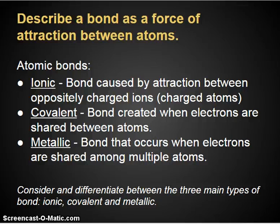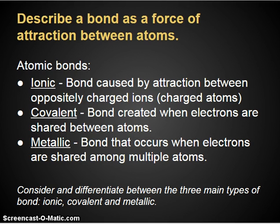A bond is a force of attraction between atoms. With atomic bonds, there are three different types: ionic, covalent, and metallic. Ionic bonds are caused by attraction between oppositely charged ions or charged atoms. Covalent bonds occur when electrons are shared between atoms. A metallic bond is a modified covalent bond that occurs when electrons are shared among multiple atoms. You need to be able to differentiate between these three types of bonds and identify when you see one.